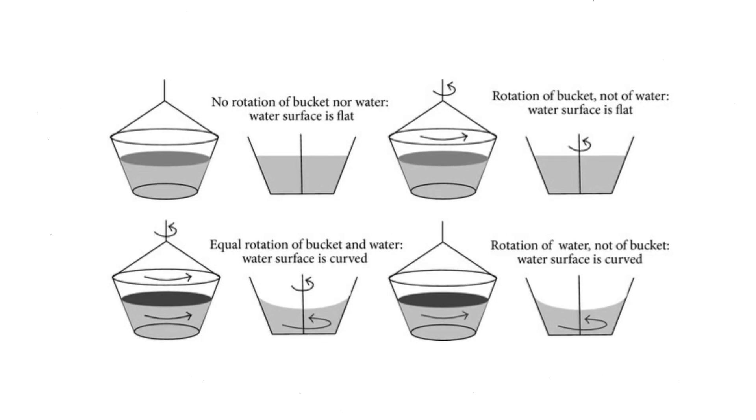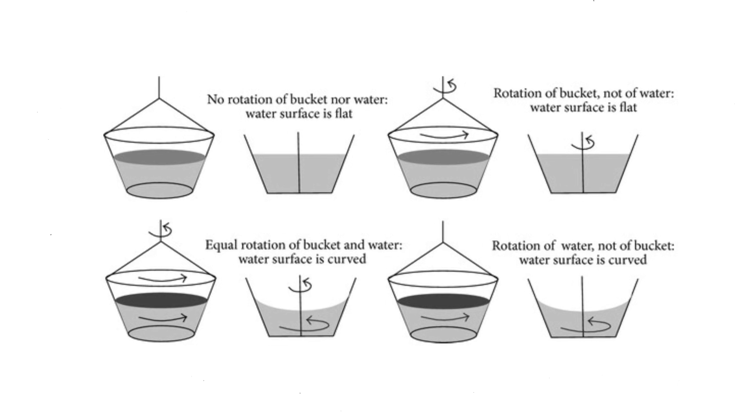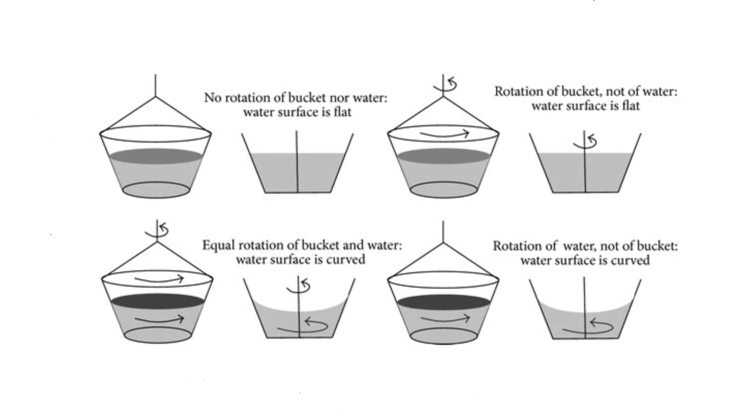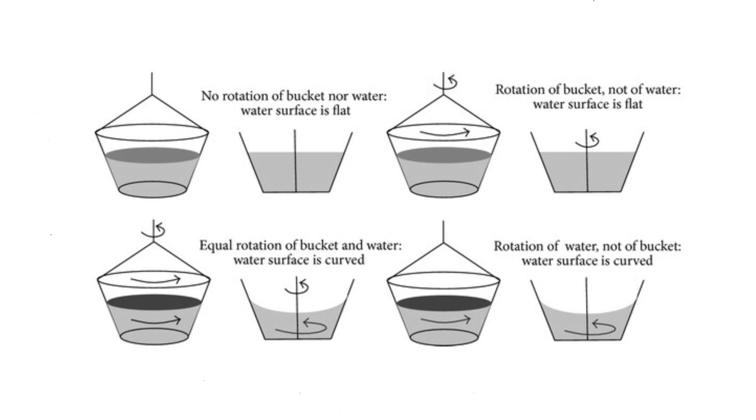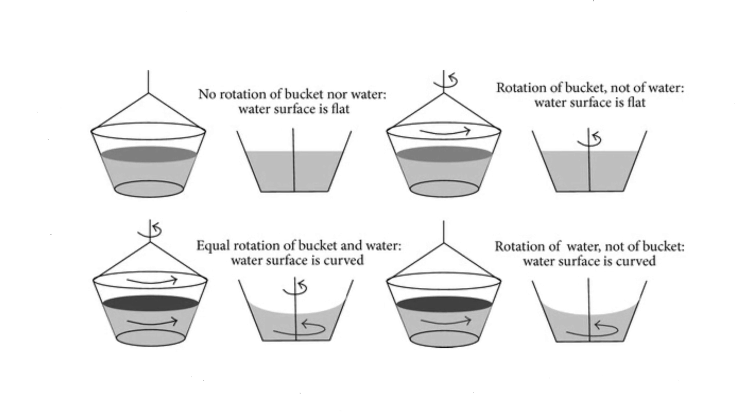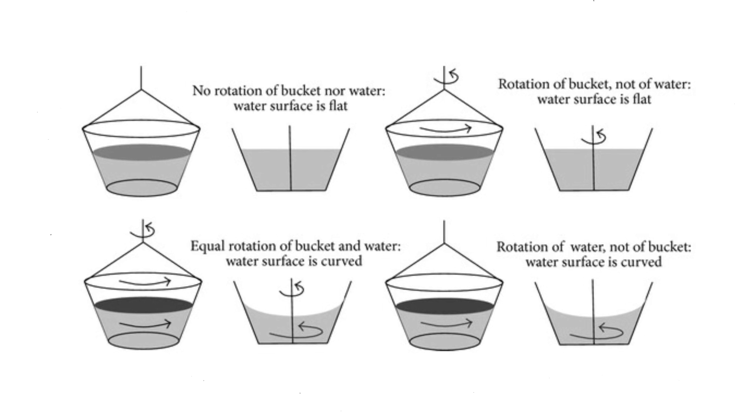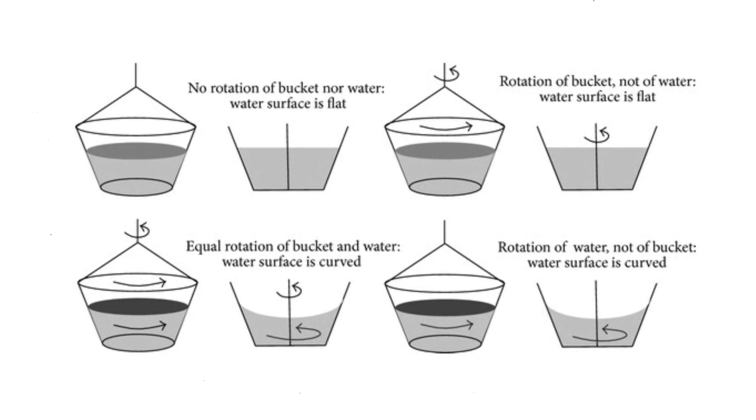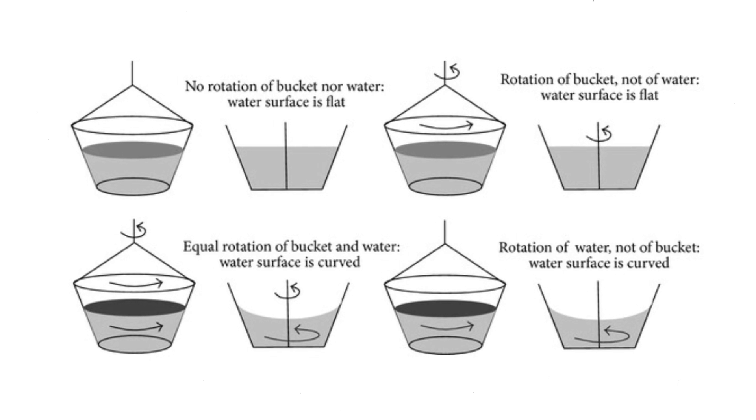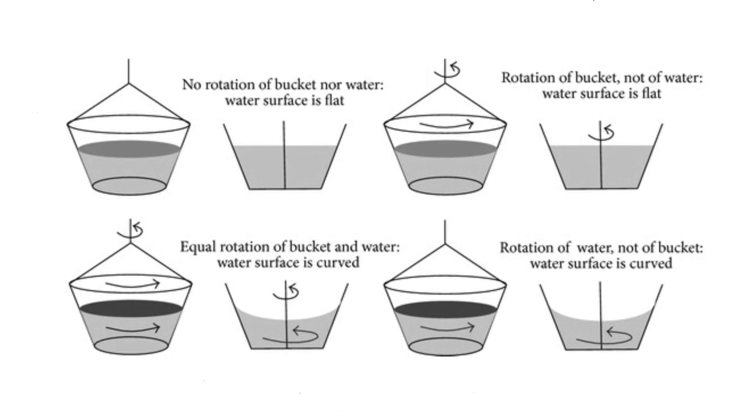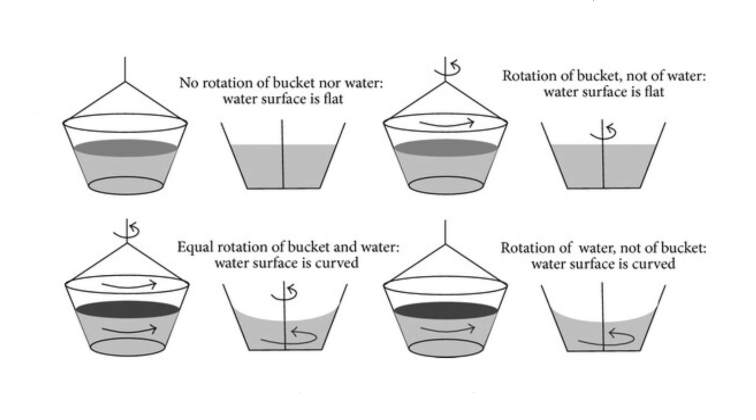A bucket with water is set spinning around its axis. At first, the walls of the bucket rotate relative to the stationary water, while the surface of the water remains flat as prior to the spinning. After the water starts to rotate as well, it rises towards the walls and its shape is no longer flat when the spinning bucket and water are at rest relative to each other.